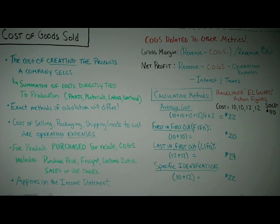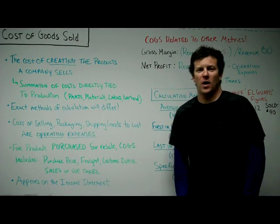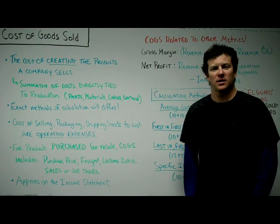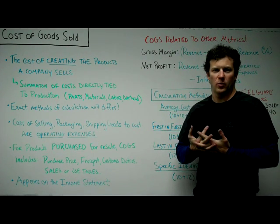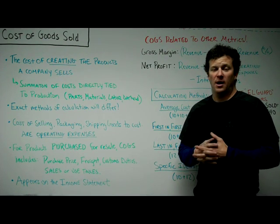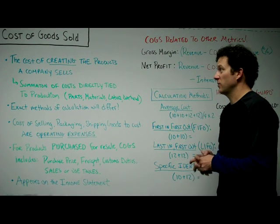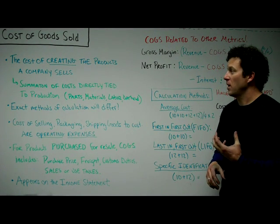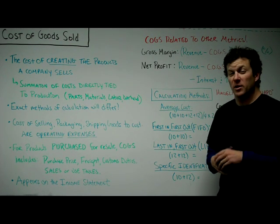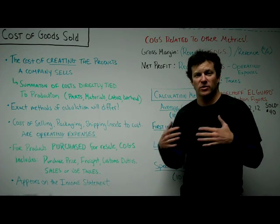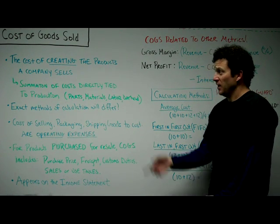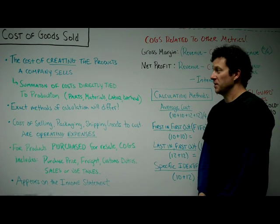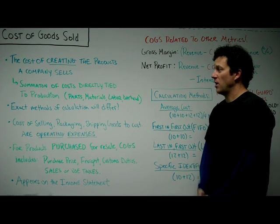Cost of goods sold is the subject we're going to deal with today. This is a phrase that refers to the cost of creating the products that a company sells. This phrase is important because it's used in conjunction in a number of places — when thinking about a company's financials, their business model, and when trying to predict profitability. Cost of goods sold is at the core of whether or not a company can achieve profitability. It's a summation of costs directly tied to production.